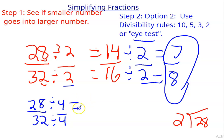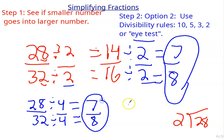So 28 divided by 4 is 7. 32 divided by 4 is 8. It doesn't matter how you get there. But if you happen to see the greatest common factor, you should use it.